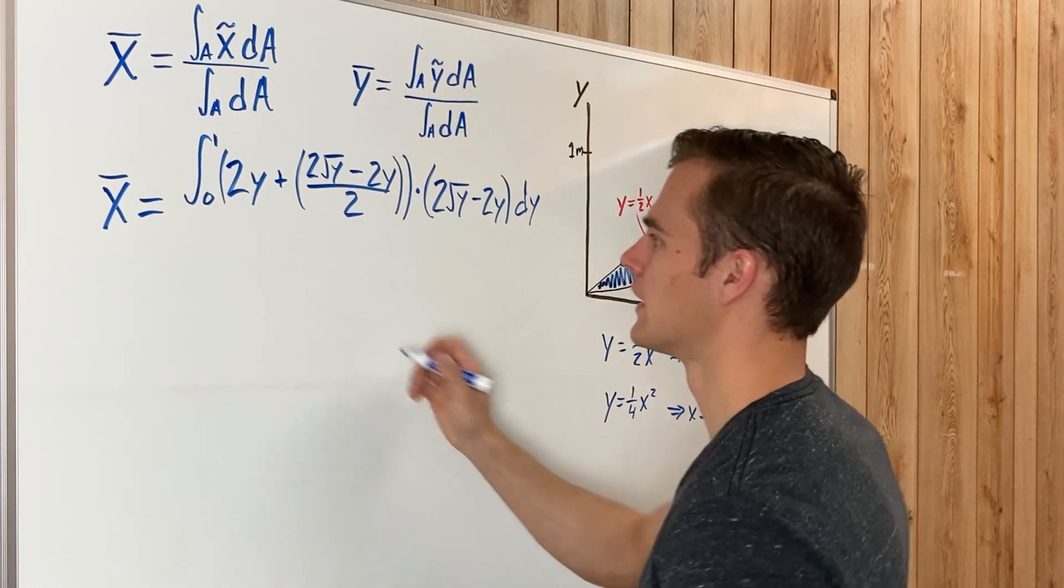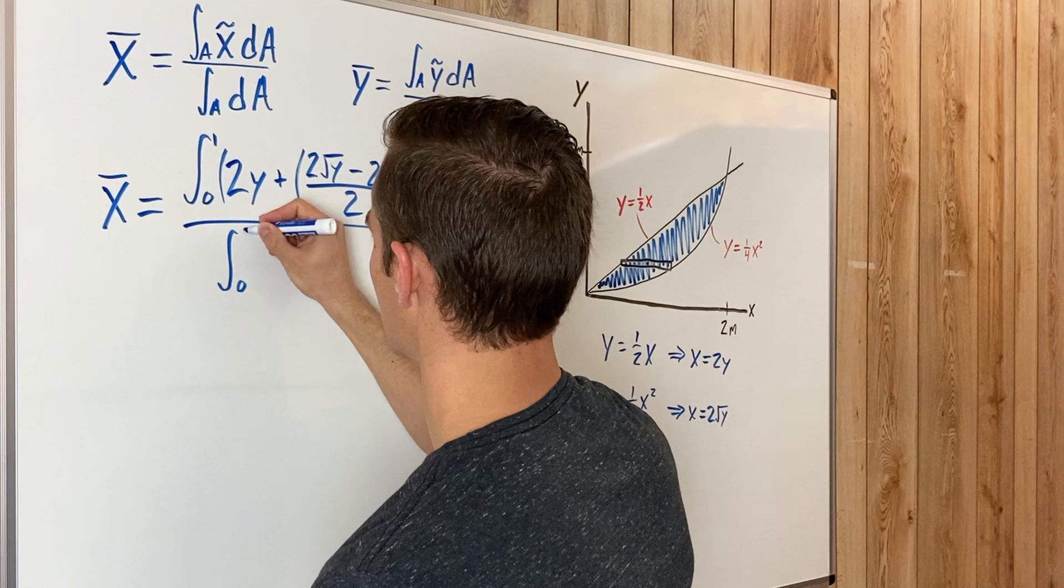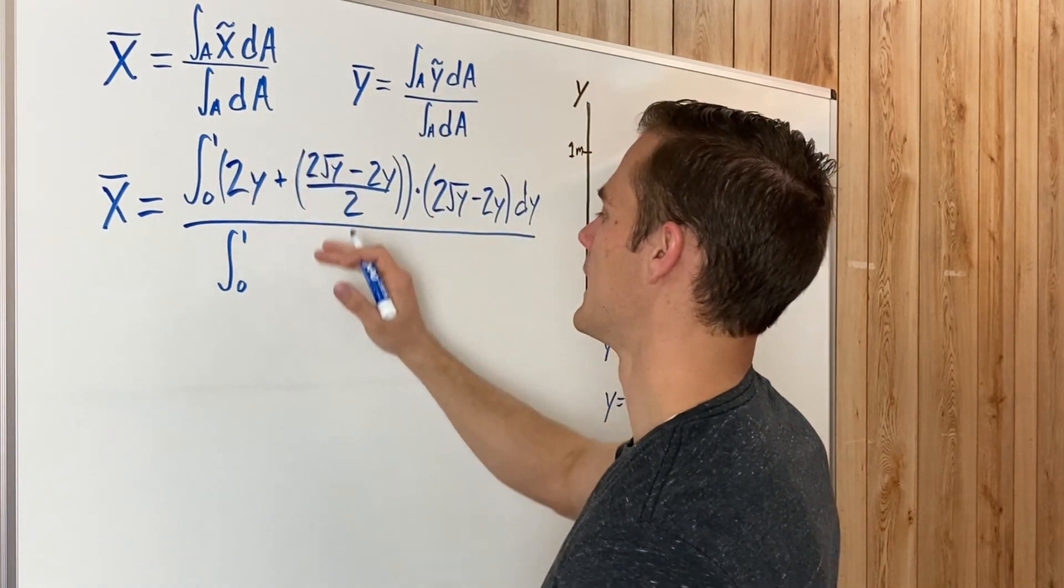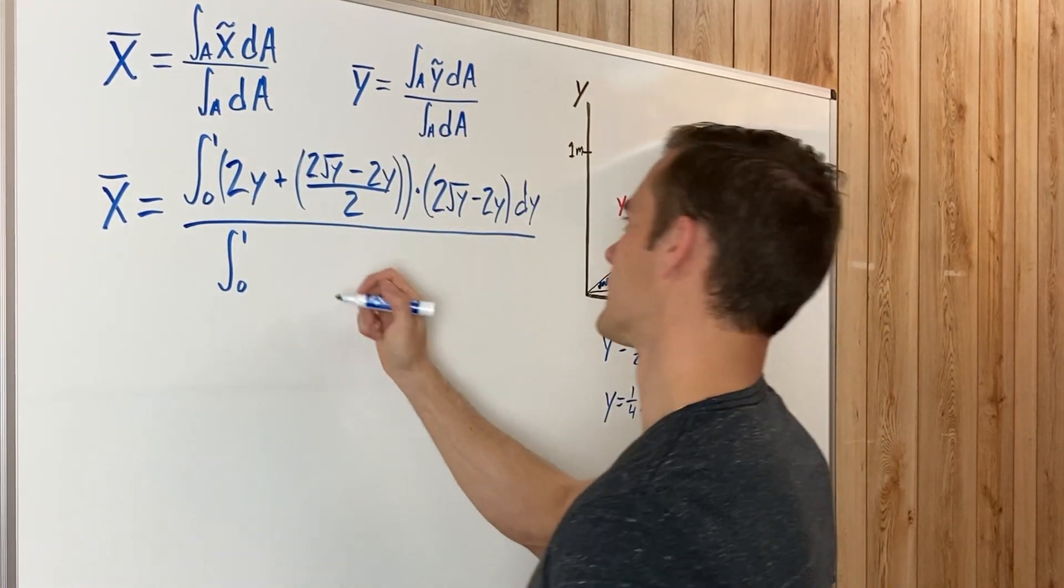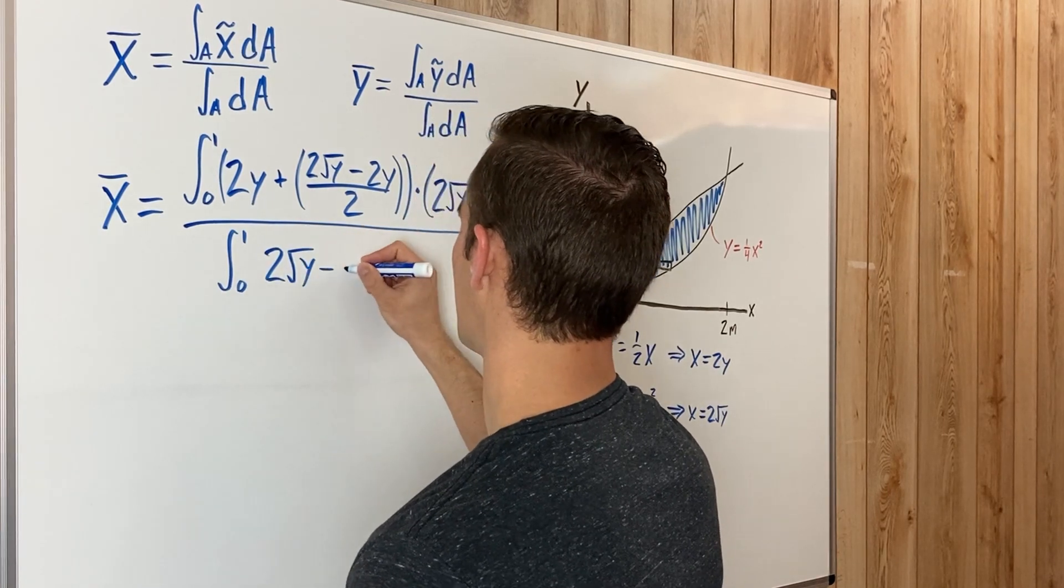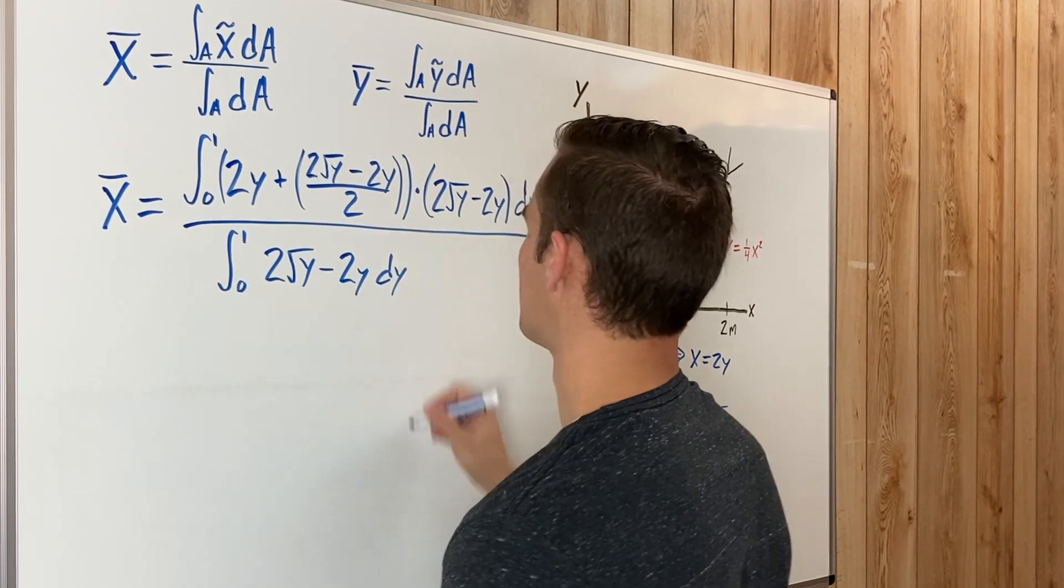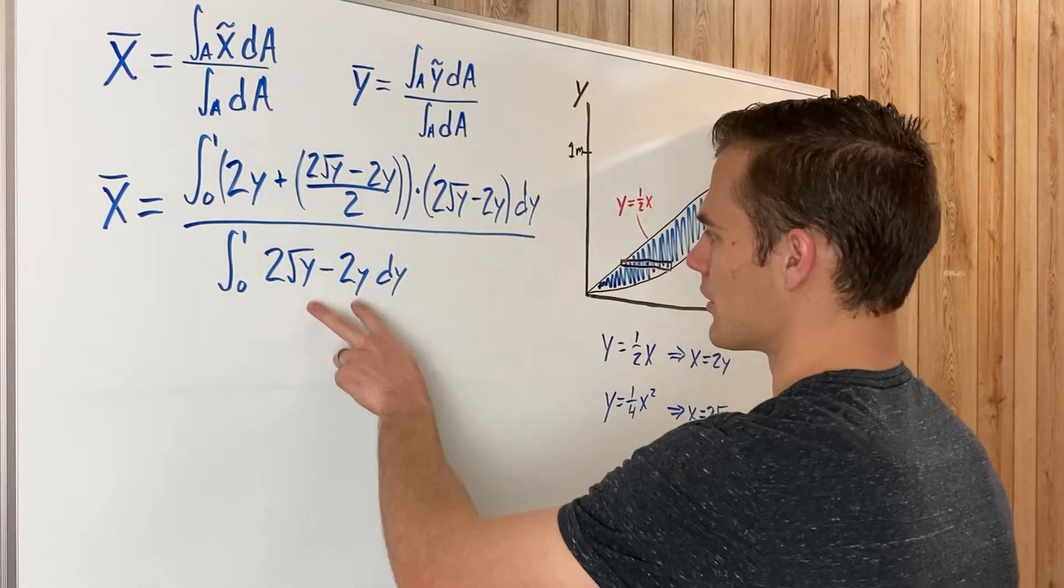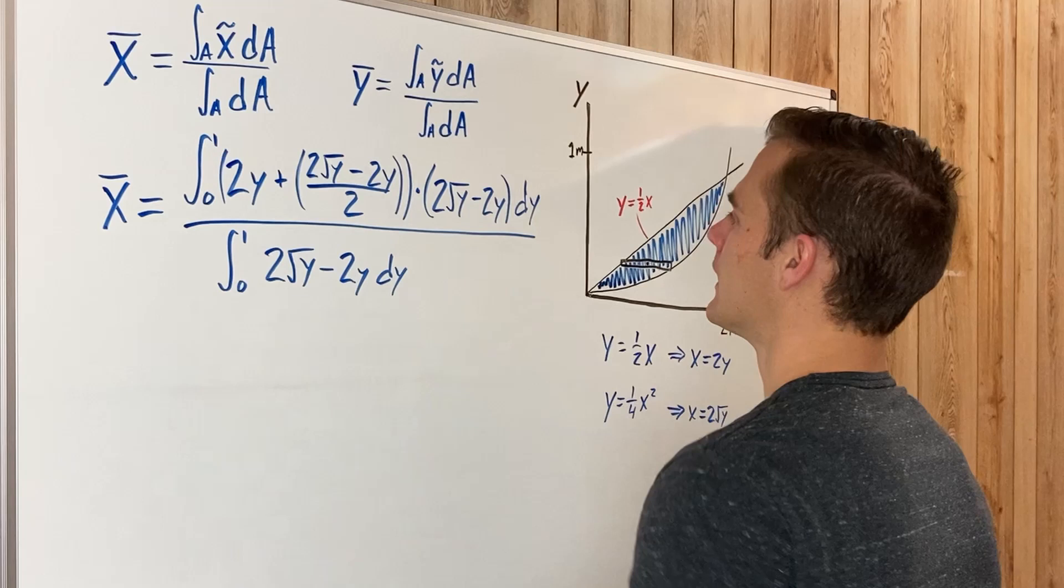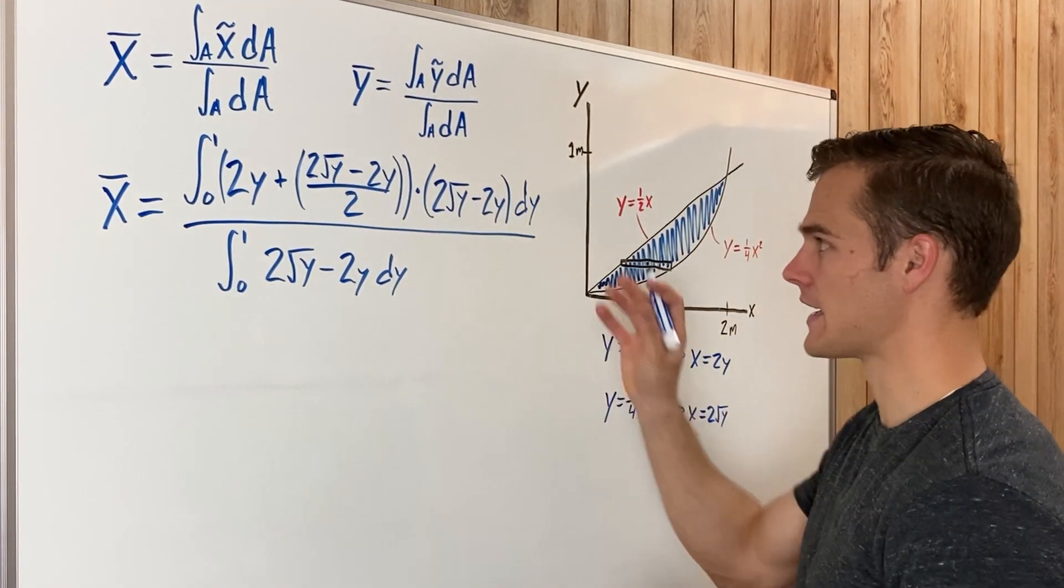So we will have two square root of Y minus two Y, and then the width of the strip is just the DY, the differential slice. So this is DA, this is X tilde, and then dividing by the integral from zero to one, that would be the integral of DA. It's just this thing again, so two square root of Y minus two Y DY.